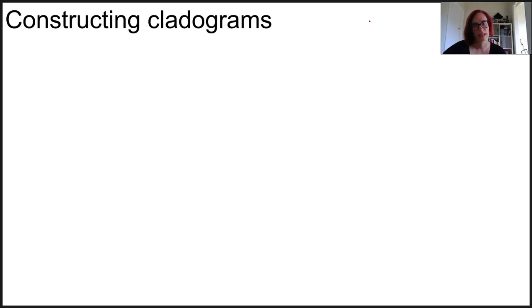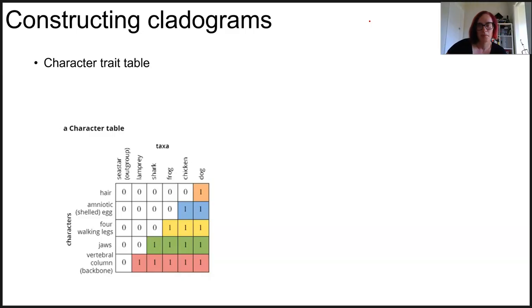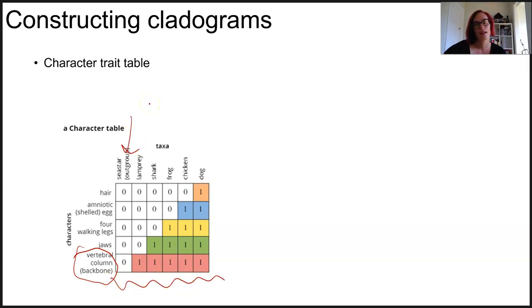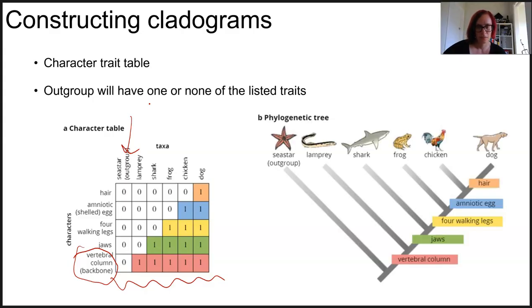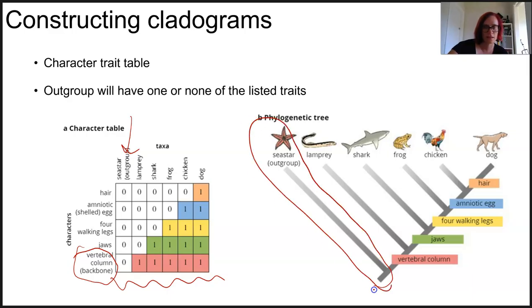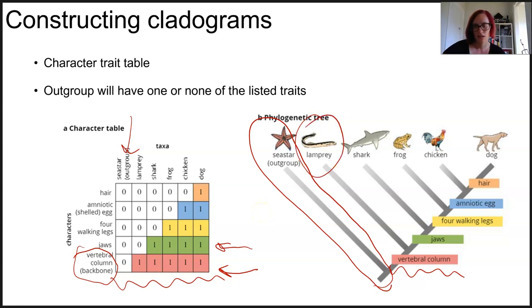To interpret cladograms, it's helpful to know how they're made — this is called cladogenesis. We use a character trait table to start, looking at which species possess which traits. The first clade is the one with the fewest traits — typically the outgroup. You can make many different configurations from the same data, but the most likely relationship is the simplest one with the fewest number of evolutionary events. The same process can occur using molecular data, where DNA, RNA, or protein sequences are used to create differences between organisms.